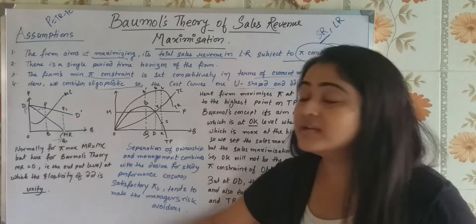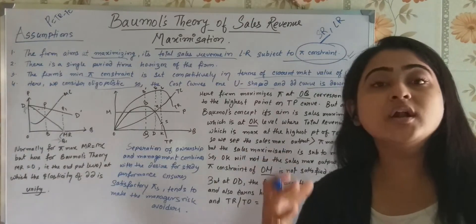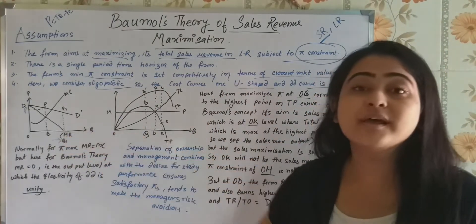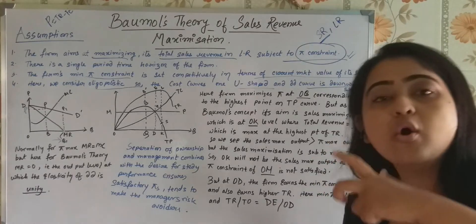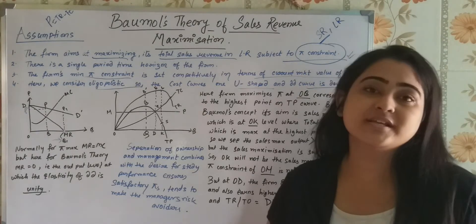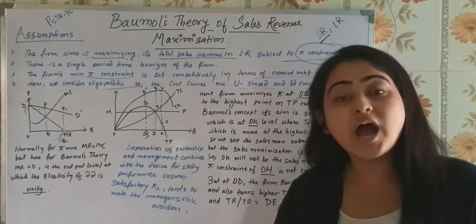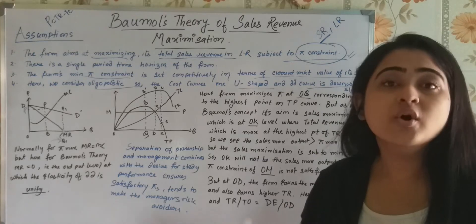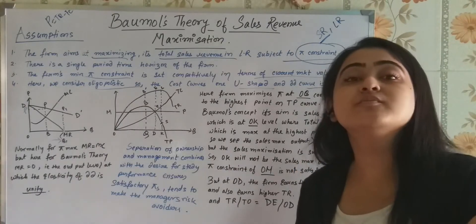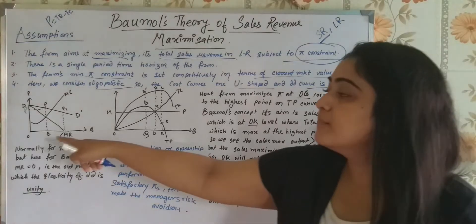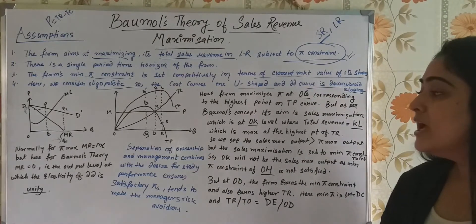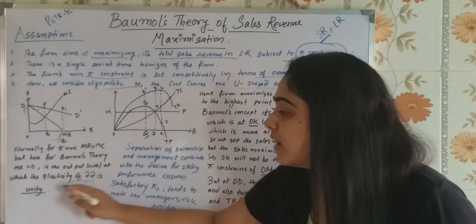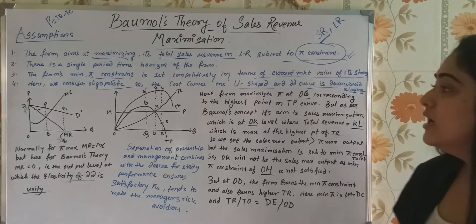From here you can easily analyze that the sales maximization output is much more than the profit maximization level of output. The output level for sales maximization, the revenue which we increase, is much more than this profit maximization output. Here you see, that is the output level at which the elasticity of demand is unity.